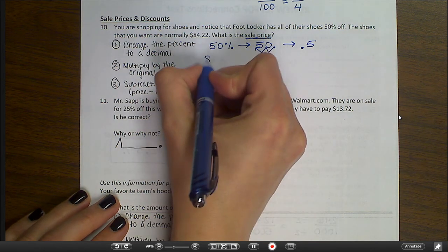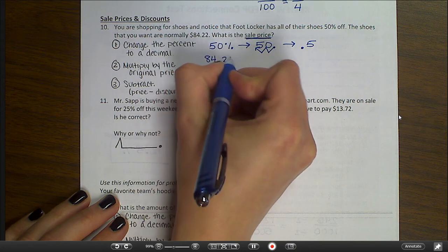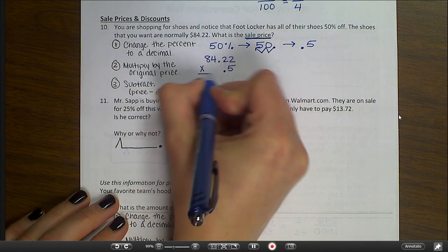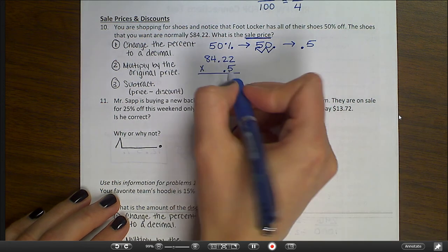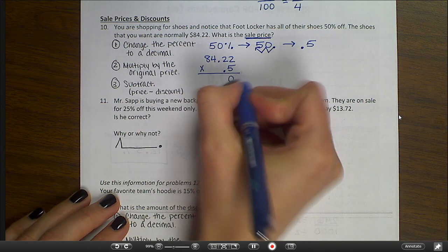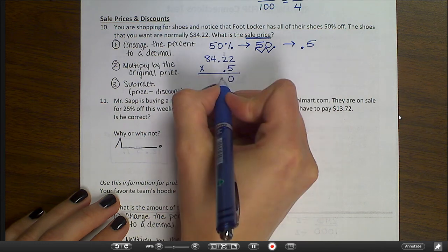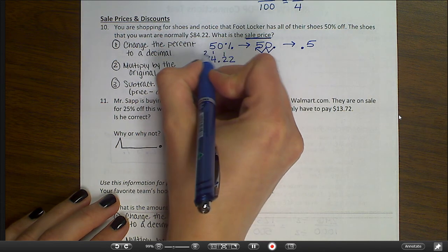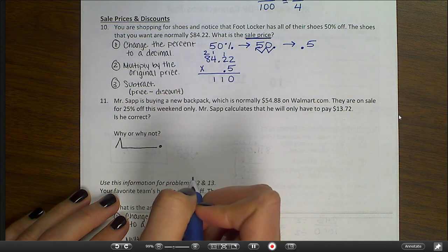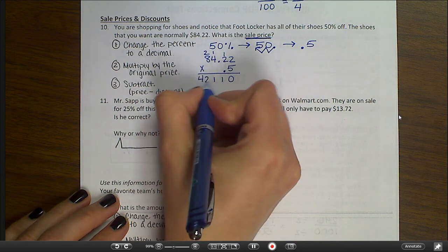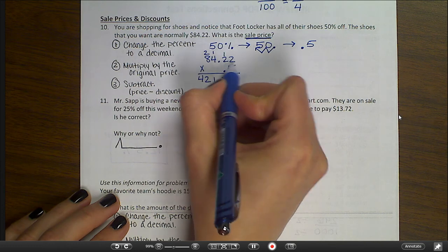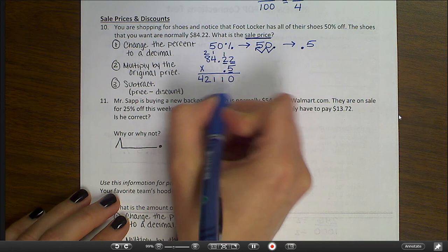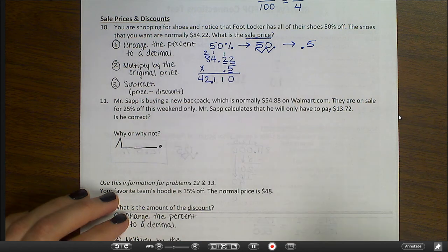My decimal point is always at the end unless they tell me it's somewhere else. And I'm going to move the decimal two places to the left so that I end up with five tenths. Then I'm going to multiply by the original price. So if I have $84.22 and multiply by five tenths. Remember, I do not need to line up the decimal point when I'm multiplying. Five times two is ten. Five times two plus one is eleven. Five times four plus one is twenty-one. Five times eight plus two is forty-two. And then I need to count how many digits I have after the decimal. I have one, two, three digits after the decimal. So I'm going to have three digits after the decimal here.